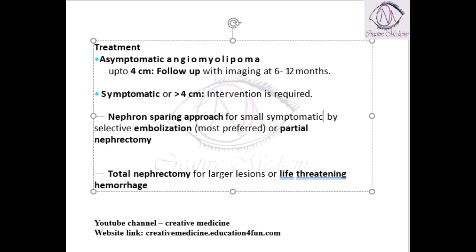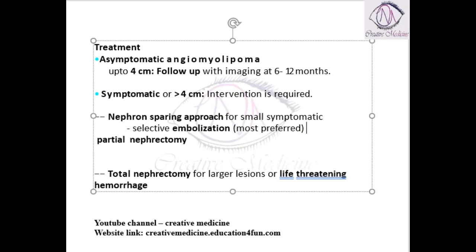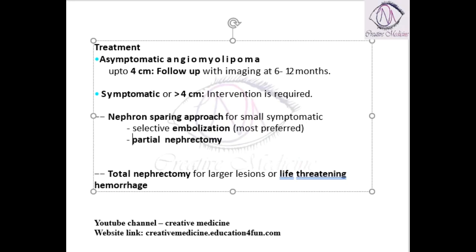For angiomyolipoma in symptomatic cases, the nephron-sparing approach is mainly done by embolization and partial nephrectomy. Among these two, embolization is more preferred when compared to partial nephrectomy.